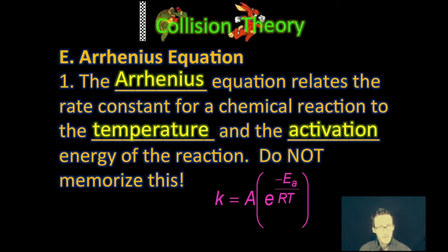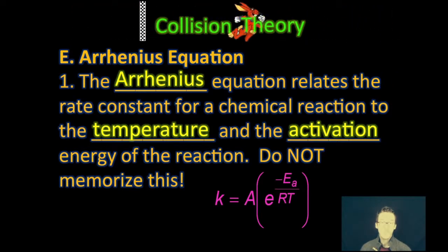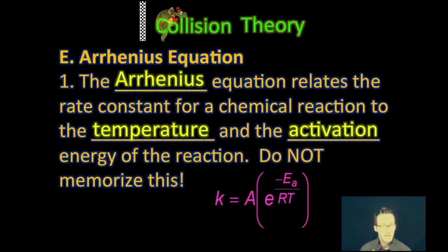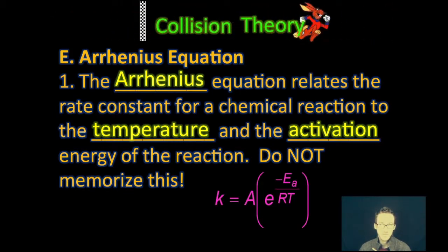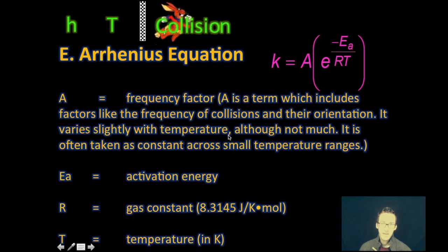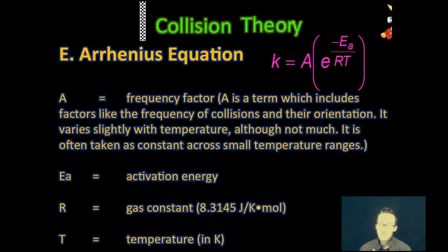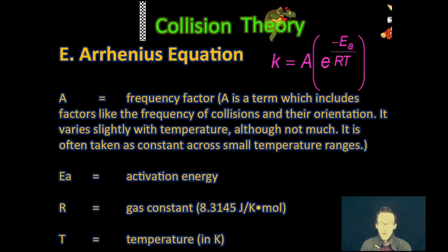This brings us to the Arrhenius equation. This equation is no longer on the AP Chemistry formula chart; however, it's a super important equation to think about. What we can derive from it still appears on the AP test, so keep that in mind. The equation relates how we define the rate constant for a chemical reaction and how it connects temperature and activation energy. The A value is called the frequency factor — a term that includes the frequency of collisions and their orientation. It varies very slightly over temperature, so it's often taken as a constant.